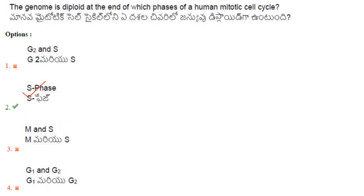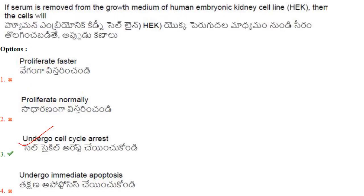The genome is duplicated at the end of which phase of the human mitotic cell cycle? DNA gets replicated during the S phase, so the answer is option 2: S phase.